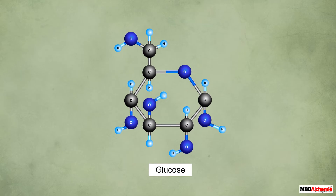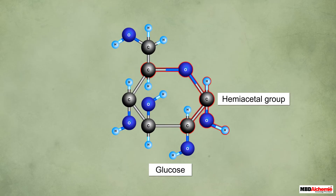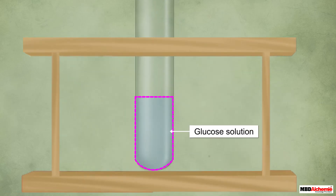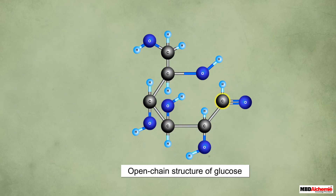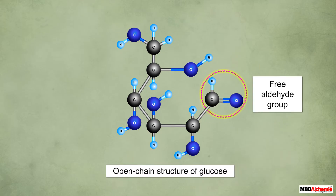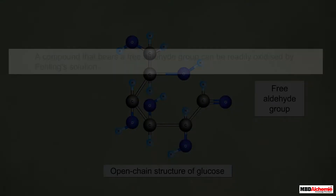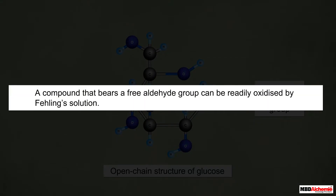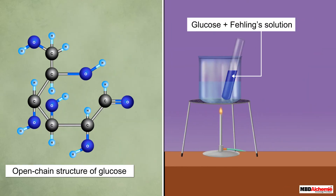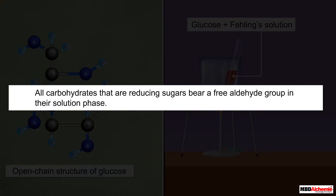Glucose is a monosaccharide that has a cyclic structure with a free hemiacetal group. In the solution phase, the ring structure of glucose opens up at the carbon bearing the hemiacetal group. During the ring opening, the hemiacetal group changes to a free aldehyde group. A compound that bears a free aldehyde group can be readily oxidized by Fehling's solution. Thus glucose is readily oxidized by Fehling's solution and is a reducing sugar.